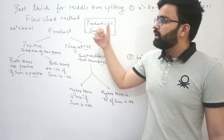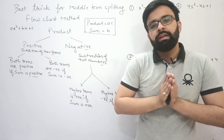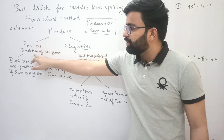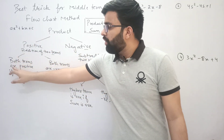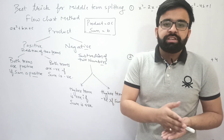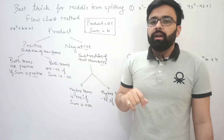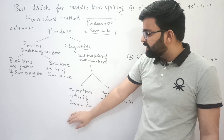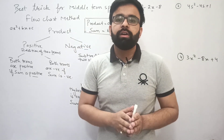If the product ac is positive, the two numbers have the same sign and must be added. If the product is negative, the two numbers have opposite signs and must be subtracted. If the sum is positive, the larger term is positive; if the sum is negative, the larger term is negative. This is the general method.